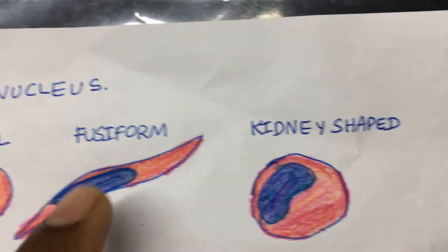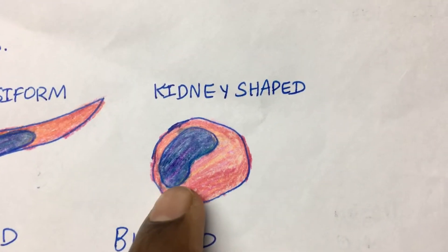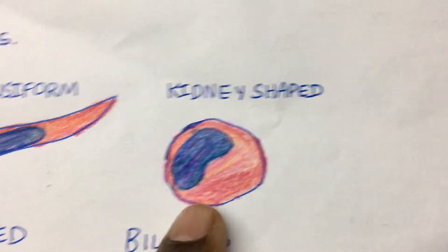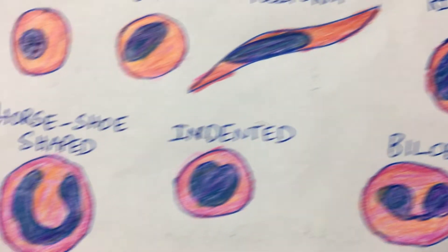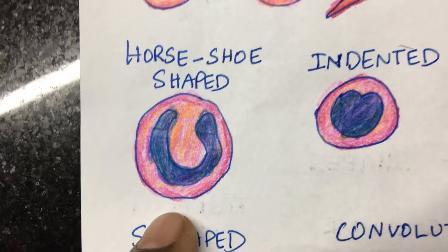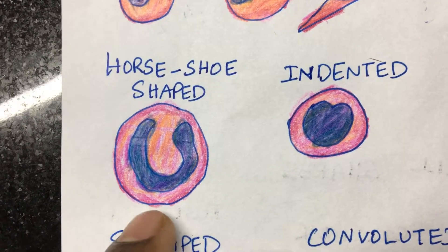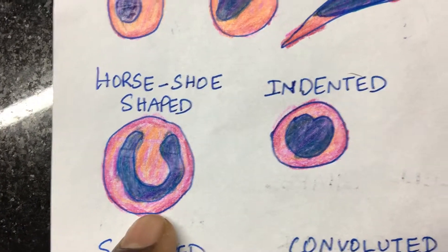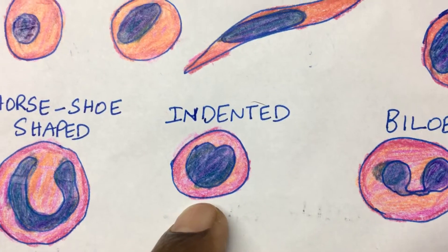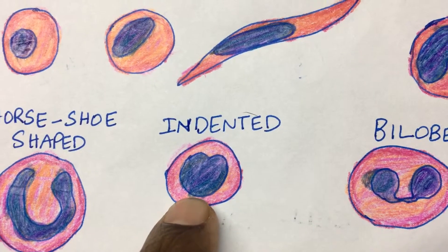Then you have the kidney-shaped nucleus, which is very commonly seen in macrophages and monocytes. And you have the horseshoe-shaped nucleus, which is commonly seen in band neutrophils. Here is the mildly indented nucleus, which can sometimes occur in lymphocytes as well.